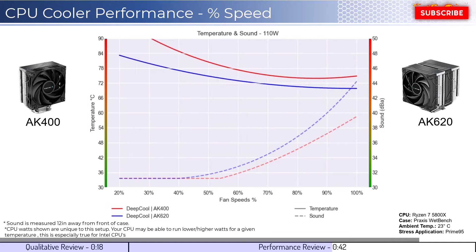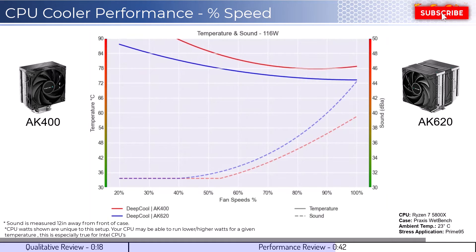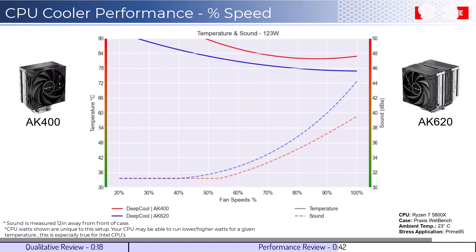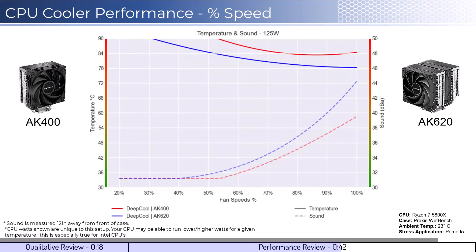Next, we will look at the CPU overclocked to 125 watts. This shows that the AK620 cooler provides materially better cooling performance at noticeably higher noise levels.